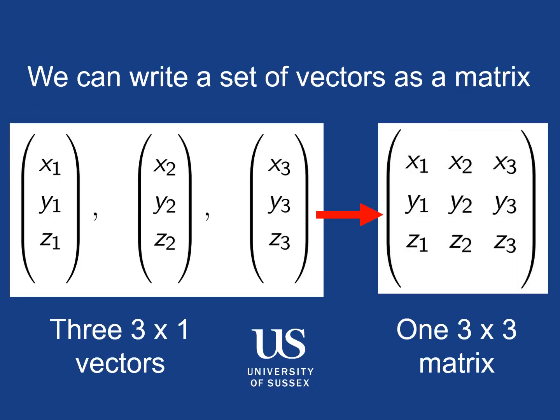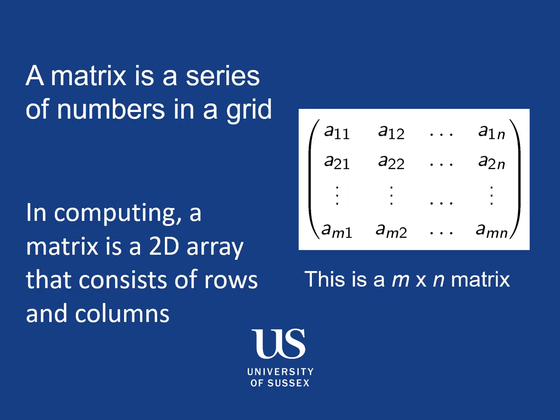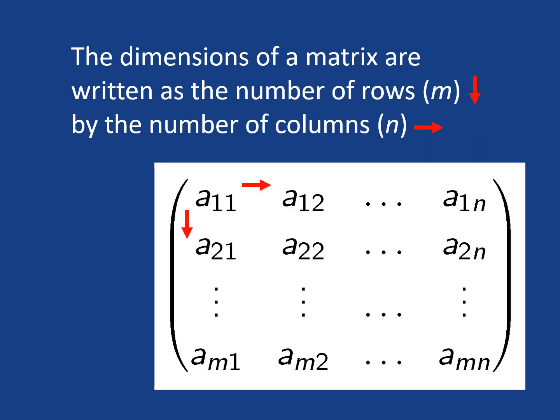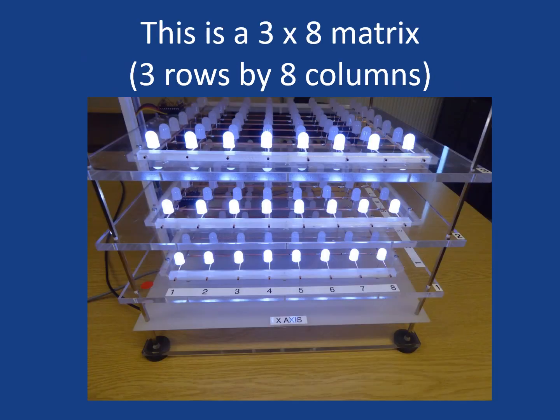You can imagine taking vectors and bringing them together to make a matrix or an array of numbers. A matrix is a series of numbers in a grid. In computing, a matrix is a 2D array that consists of rows and columns. The dimensions of the matrix are written as the number of rows by the number of columns — so m by n. We can show this on the LEDs: this is three rows by eight columns, so this is a three by eight matrix.